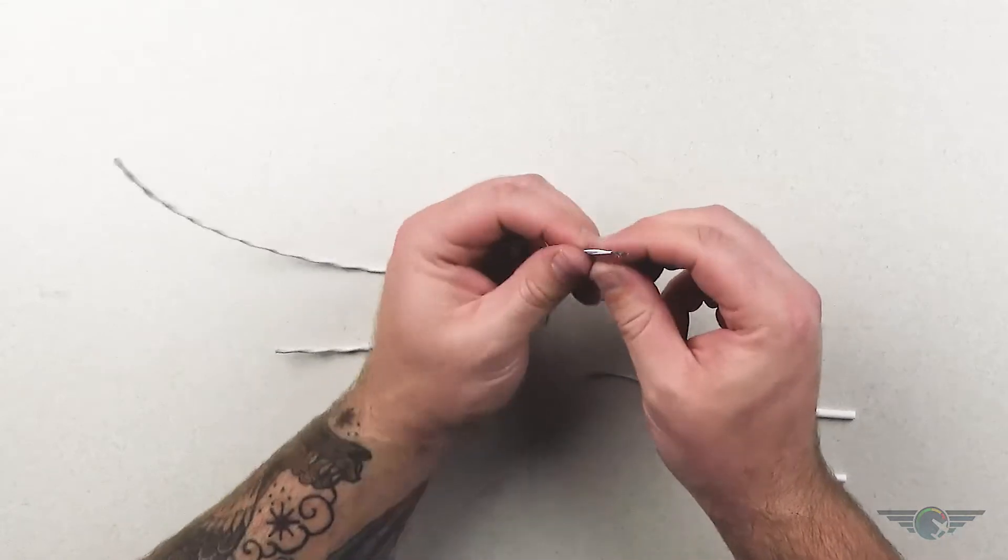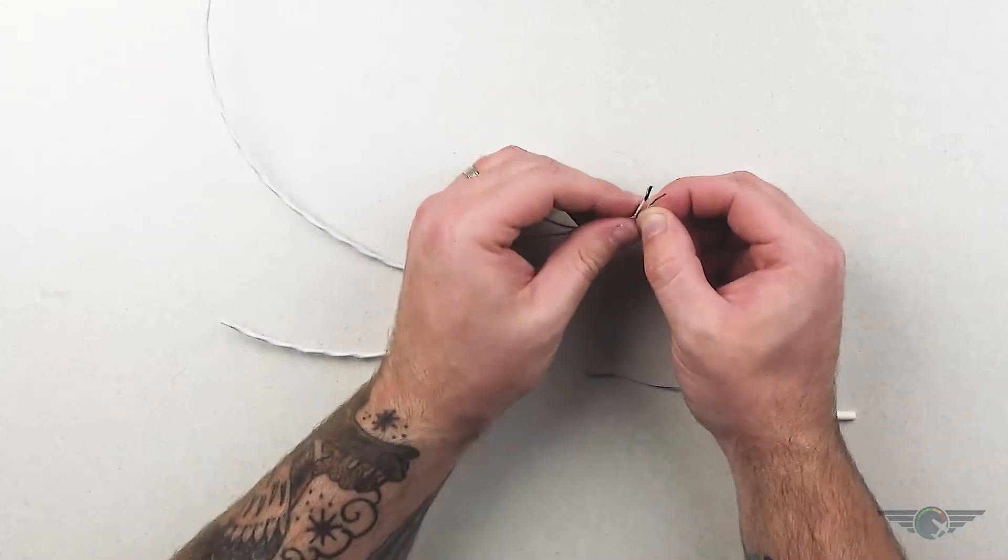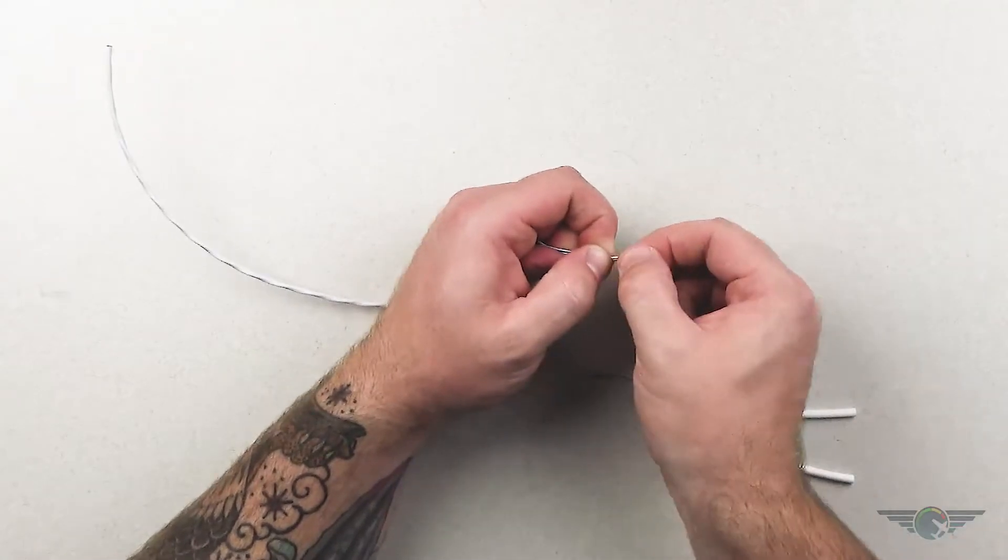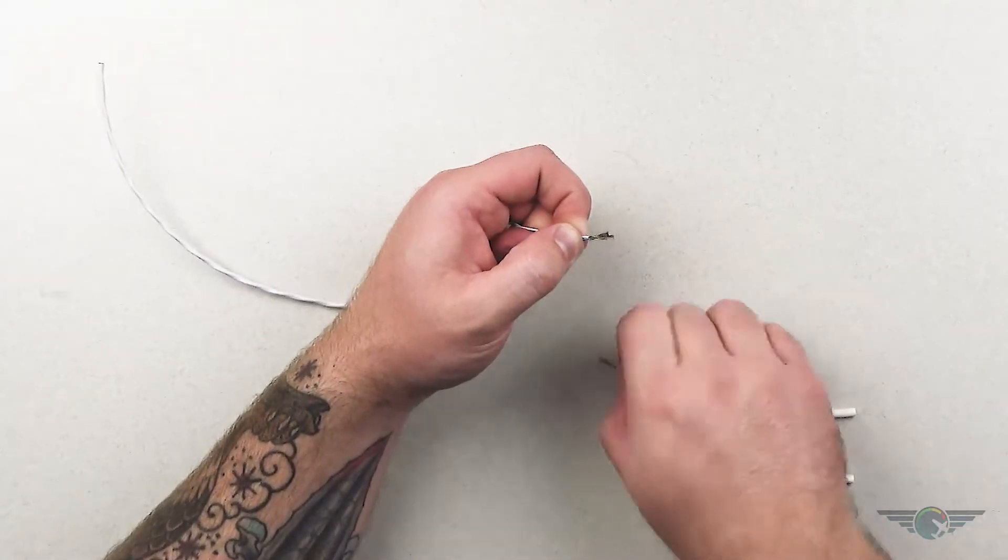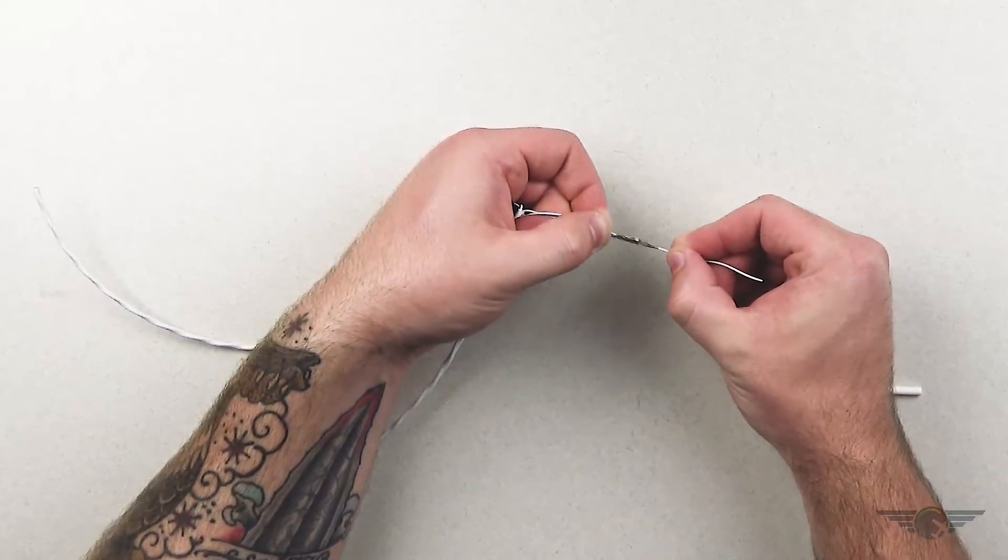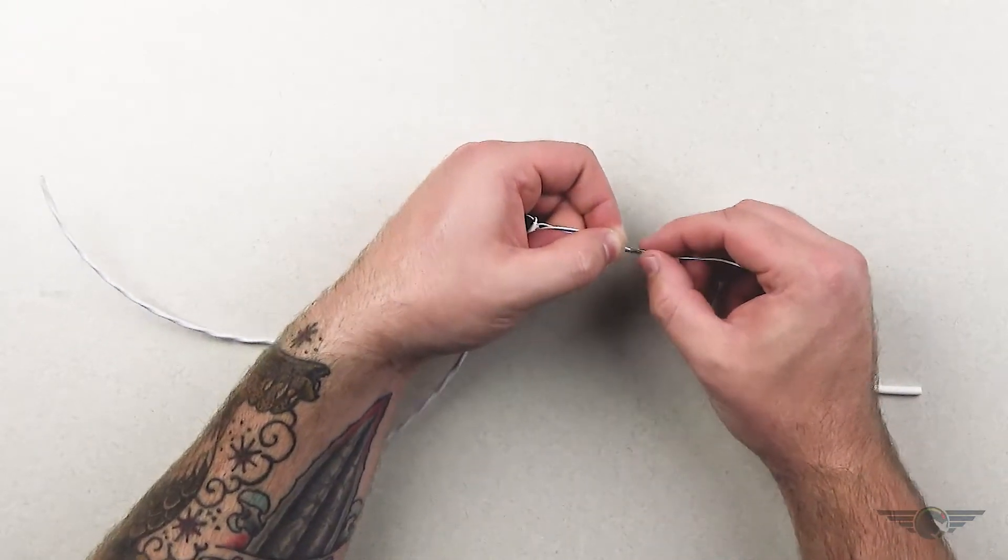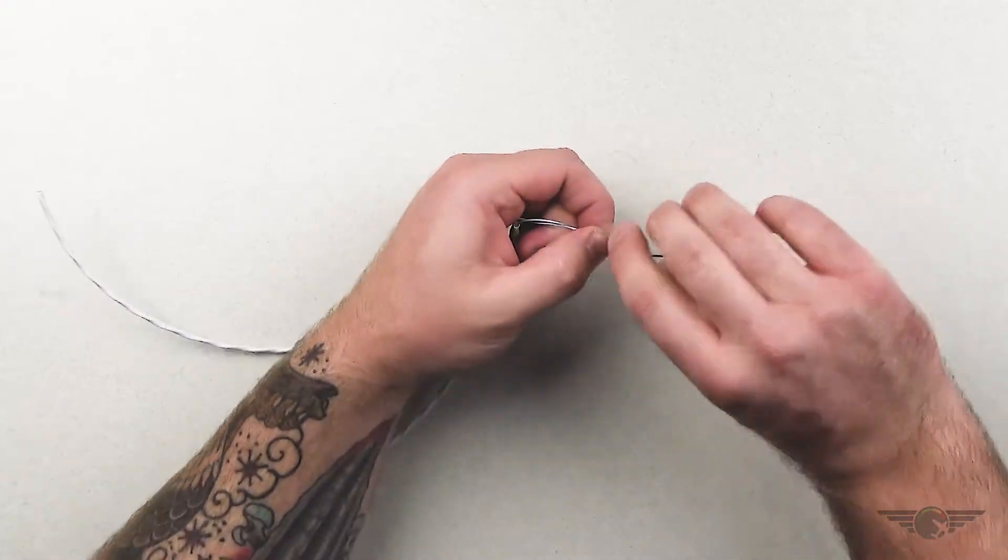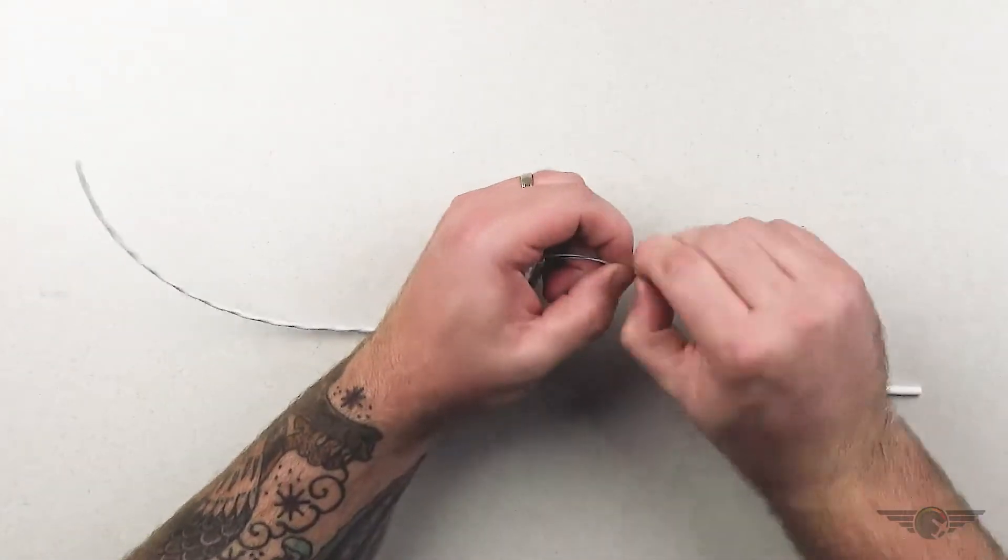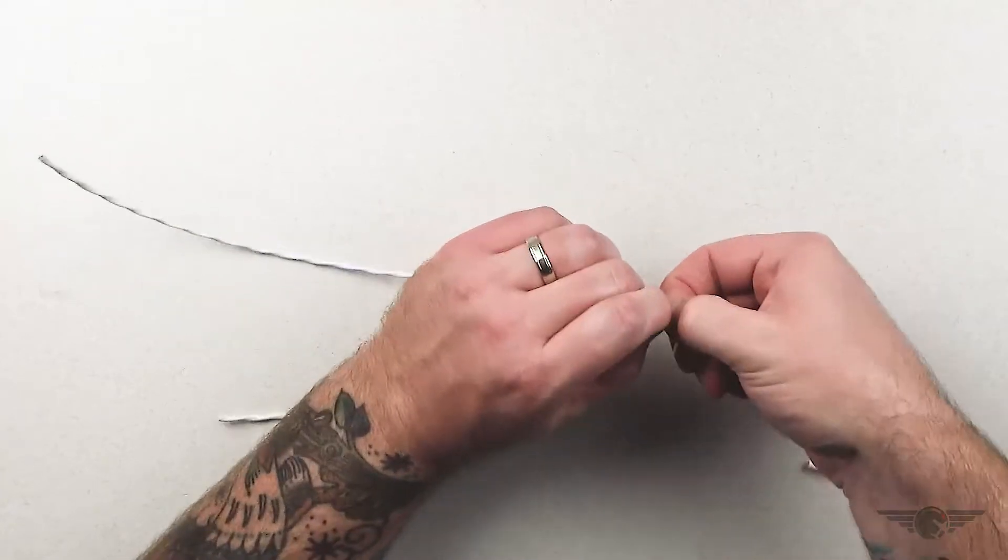All right. So now I'm going to match these guys up and kind of fan them out together. I'm not twisting yet. I'm just fanning them out, and then I'm going to use my other fan-out wire and push them together. Now, I'm going to twist.